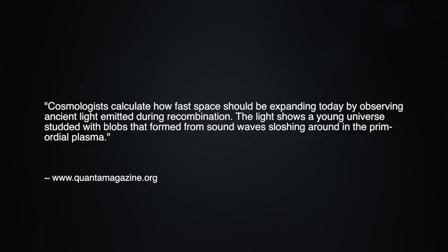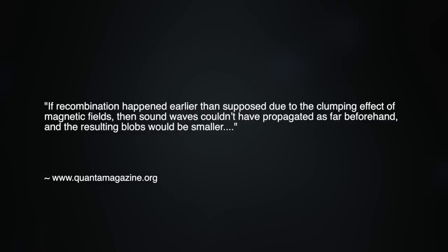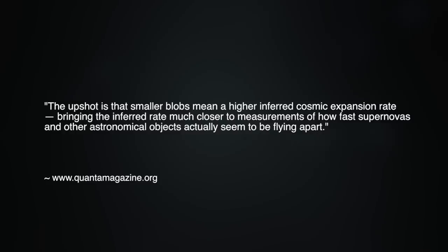Their efforts to resolve the so-called Hubble tension are described as follows: Cosmologists calculate how fast space should be expanding today by observing ancient light emitted during recombination. The light shows a young universe studded with blobs that formed from sound waves sloshing around in the primordial plasma. If recombination happened earlier than supposed due to the clumping effect of magnetic fields, then sound waves couldn't have propagated as far beforehand, and the resulting blobs would be smaller. The upshot is that smaller blobs mean a higher inferred cosmic expansion rate, bringing the inferred rate much closer to measurements of how fast supernovas and other astronomical objects actually seem to be flying apart.